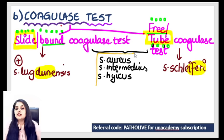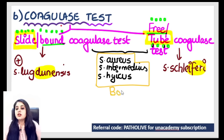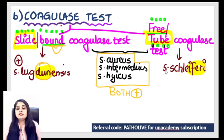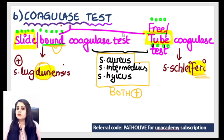To repeat: Staph aureus, intermedius, and hyicus are positive for both coagulase tests. Schlieferi is free test positive. Lugdunensis is bound test positive. For the question about which organisms do not show a particular test: the tube/free coagulase test is being shown, and Staphylococcus lugdunensis does not show this test — it only shows the bound or slide coagulase test positive.